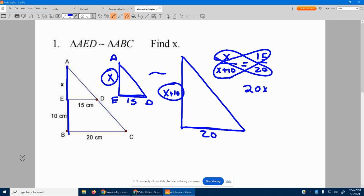So 20 times X will equal 15 times the entire X plus 10. We now will distribute the 15 through, which gives us 15X plus 150.